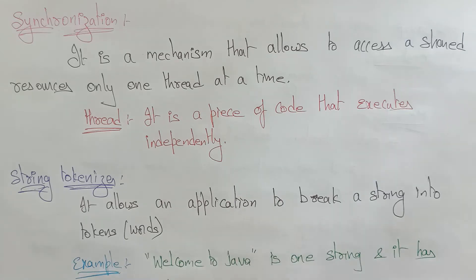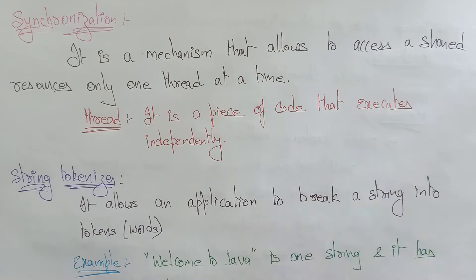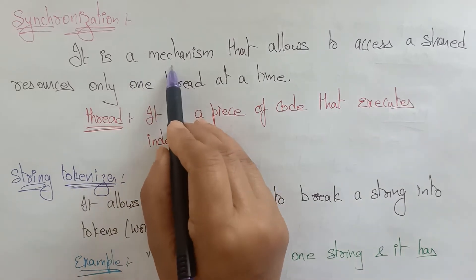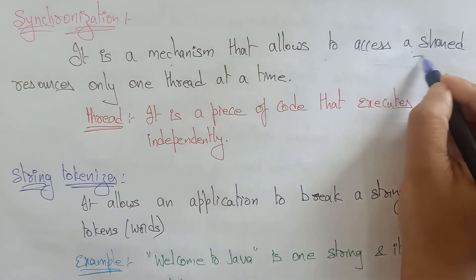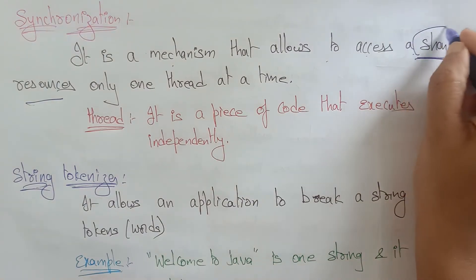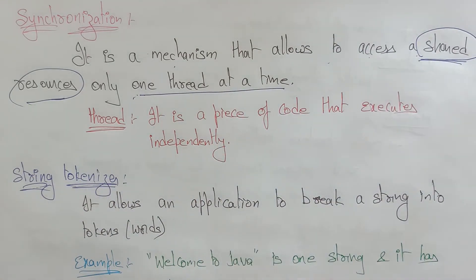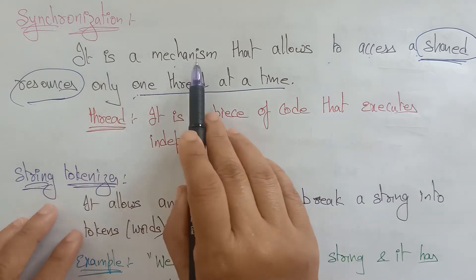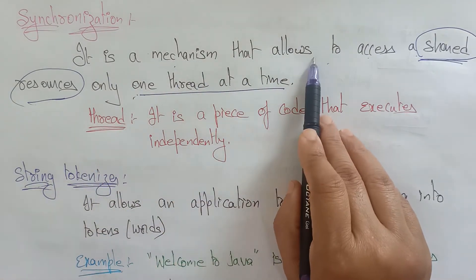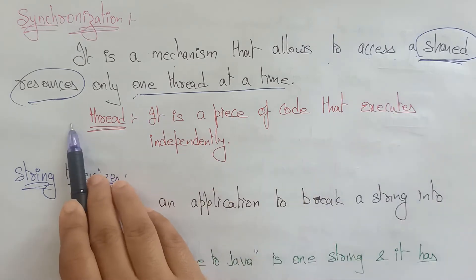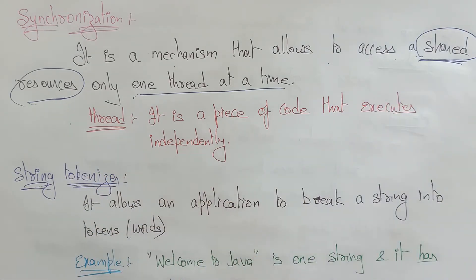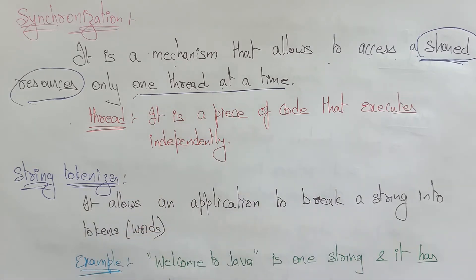Welcome back students. Coming to the next topic: String Tokenizer. But first, let's understand synchronization. Synchronization is a mechanism that allows access to shared resources — only one thread at a time. That is the meaning of synchronization.